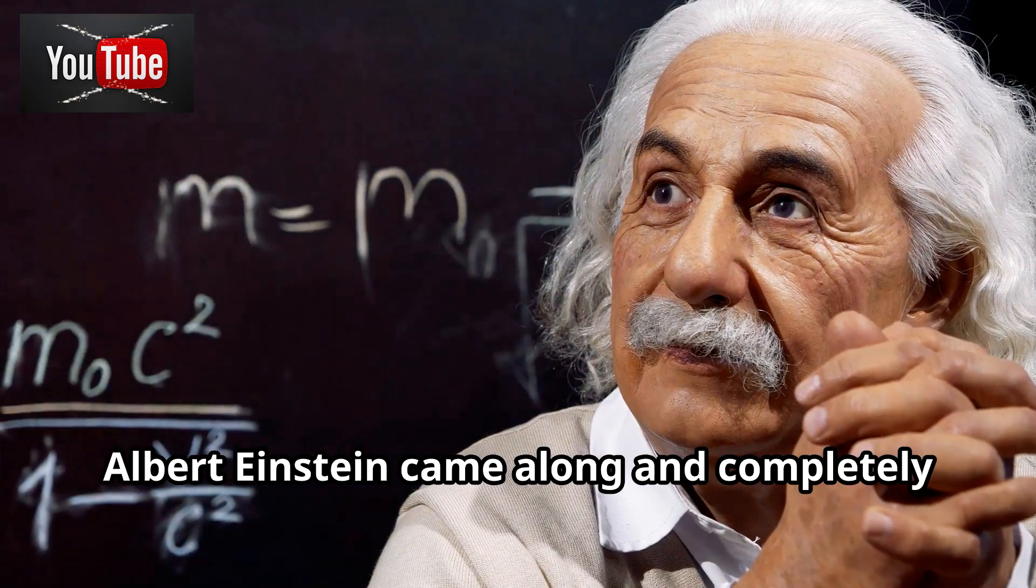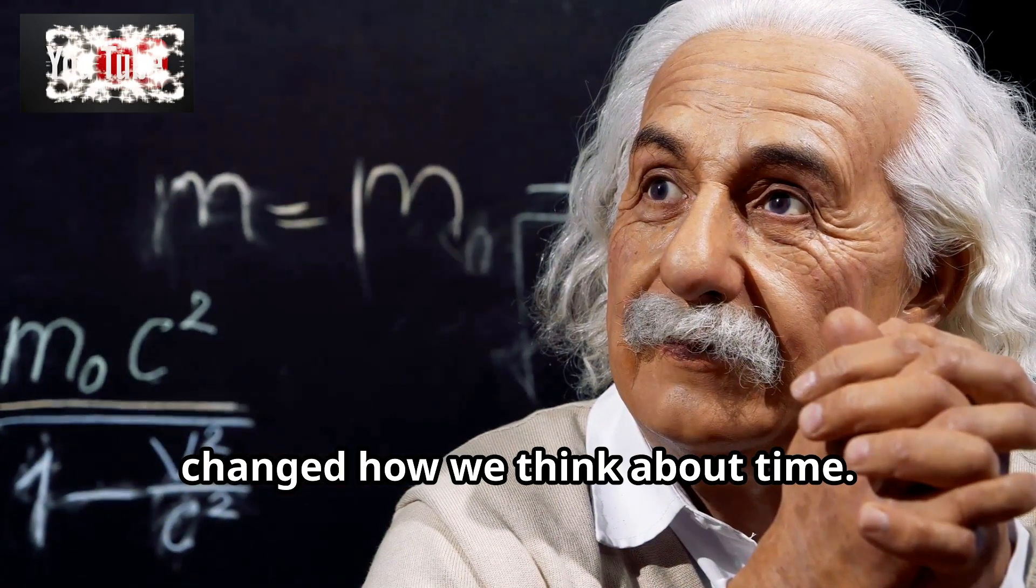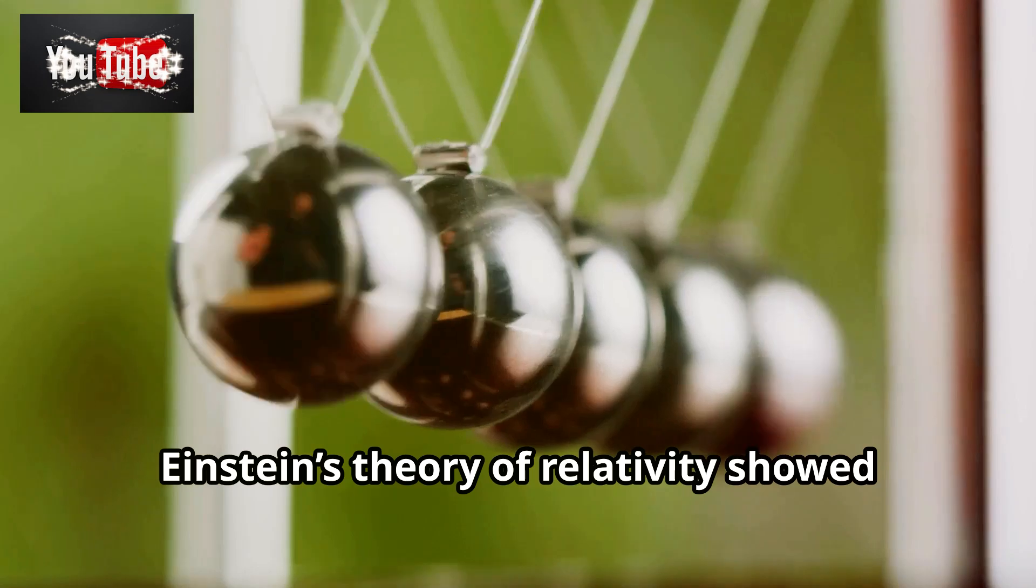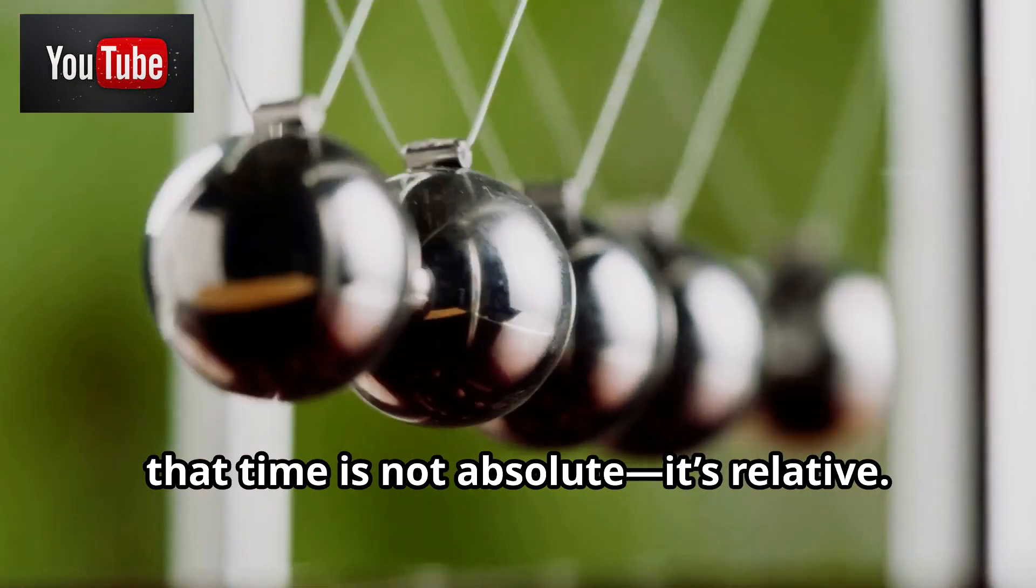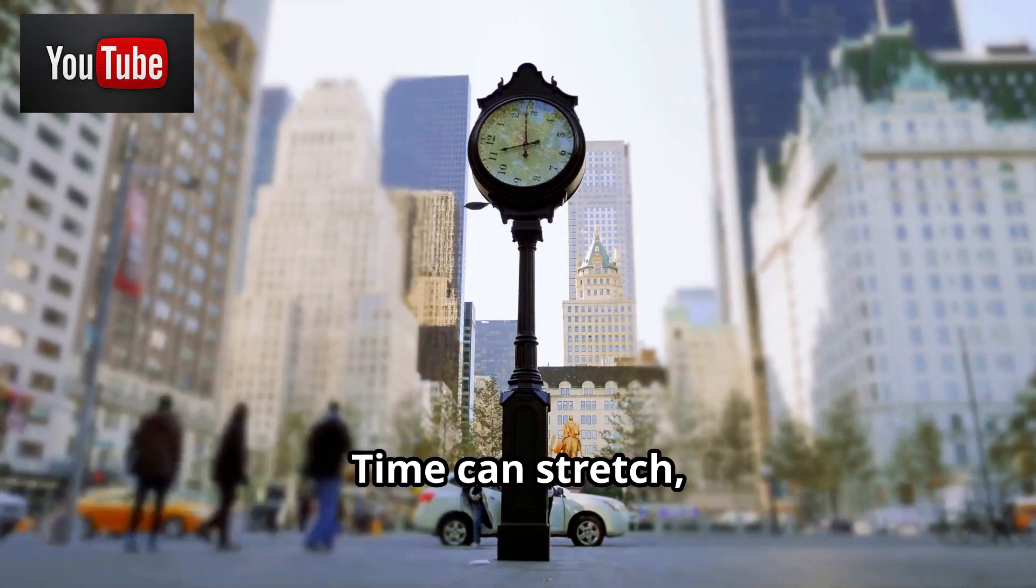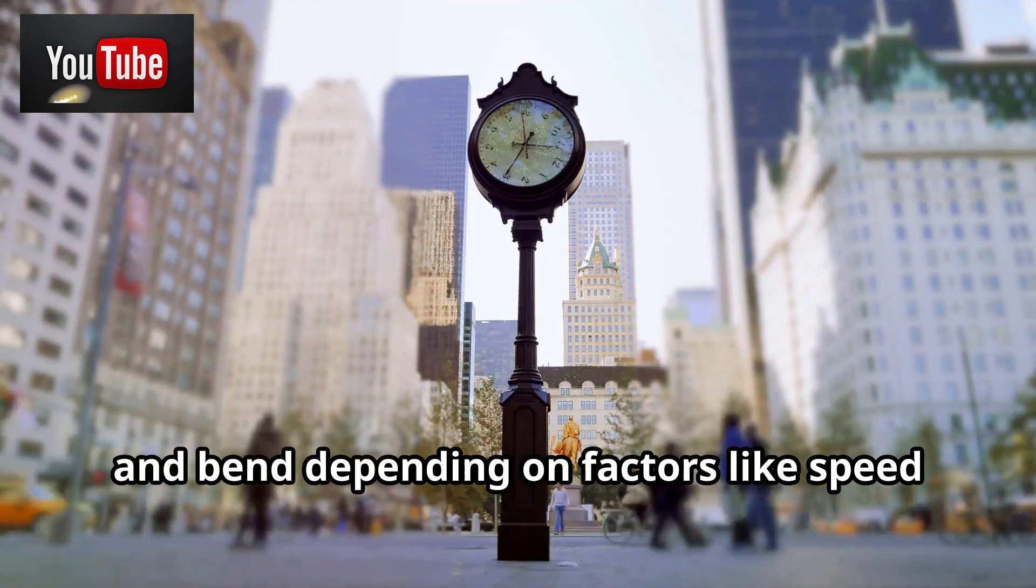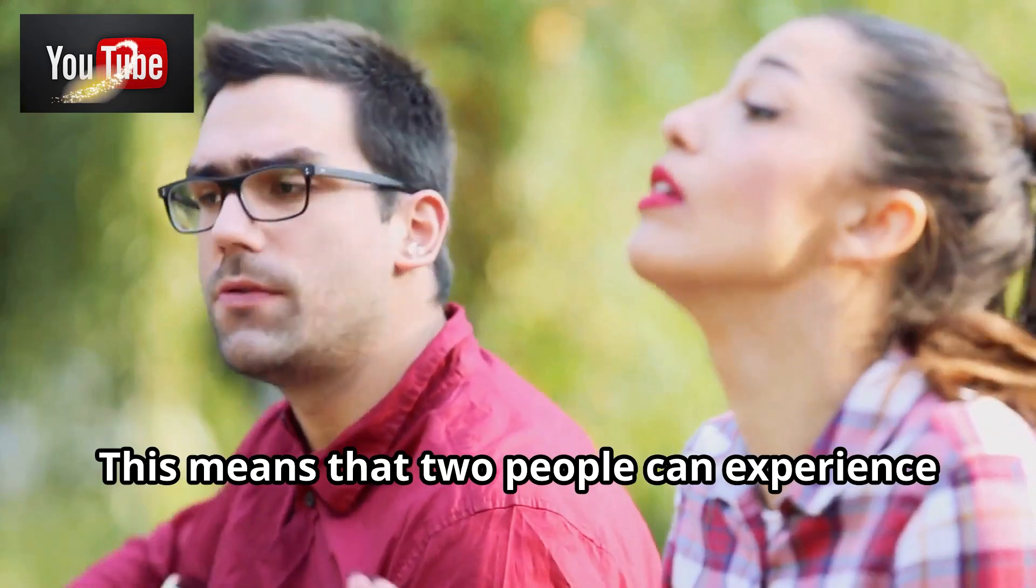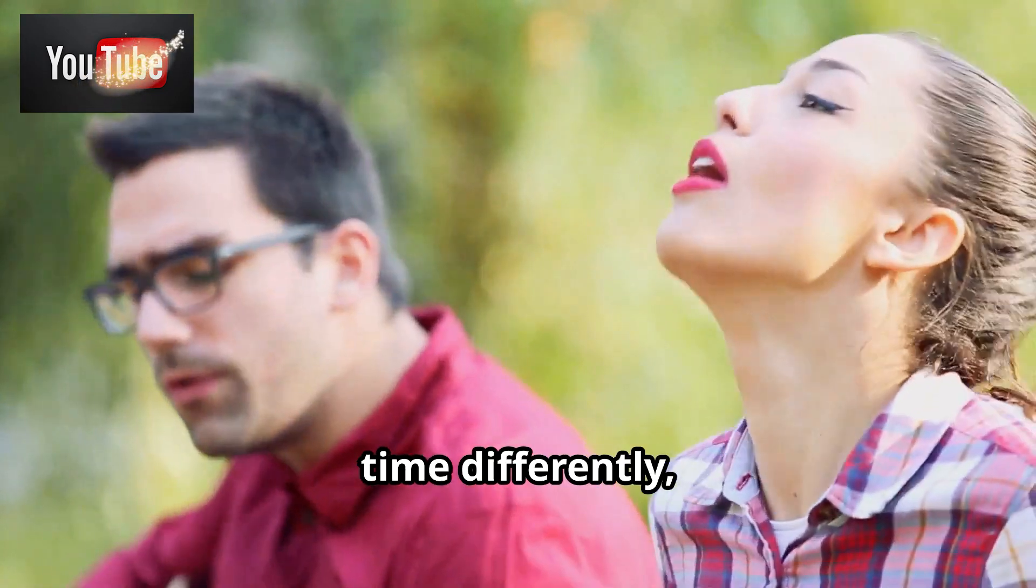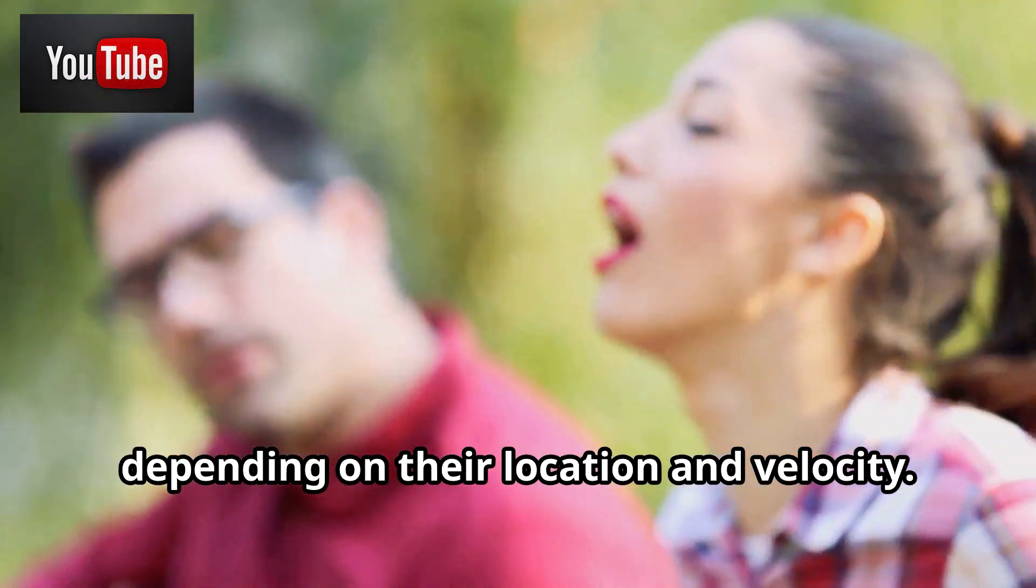Einstein's theory of relativity showed that time is not absolute, it's relative. Time can stretch, shrink, and bend depending on factors like speed and gravity. This means that two people can experience time differently, depending on their location and velocity.